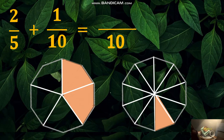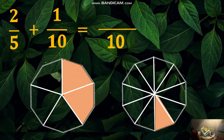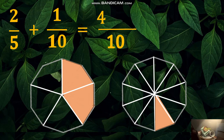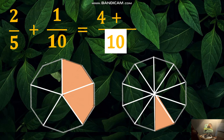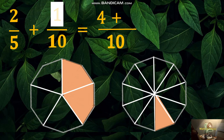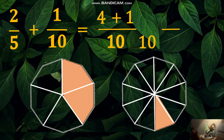Another example of adding dissimilar fractions: the first step is finding the LCD of 5 and 10, which is 10. Divide 10 by 5, then multiply by 2, which equals 4. Write the operation using the plus sign. Next, 10 divided by 10, times 1, equals 1. Copy the common denominator 10. Now add the numerators: 4 plus 1 equals 5.